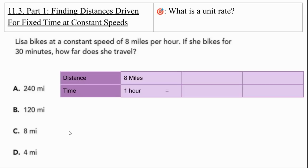Well, we need to think about that 1 hour equals 60 minutes. So if she goes 8 miles in 60 minutes, is she going to go 240 miles in 30 minutes? Is she going to go 120 miles in 30 minutes? How about 8 miles in 30 minutes? Our table tells us she goes 8 miles in 60 minutes.